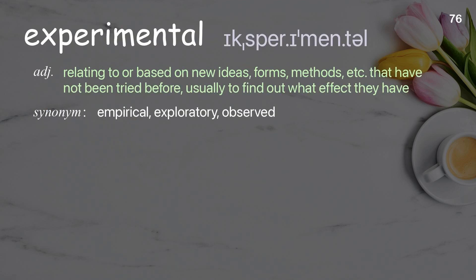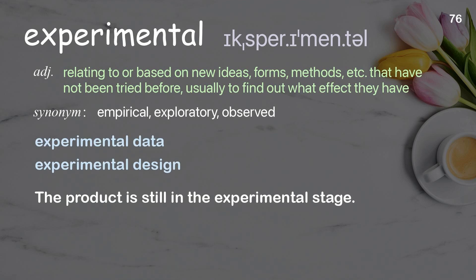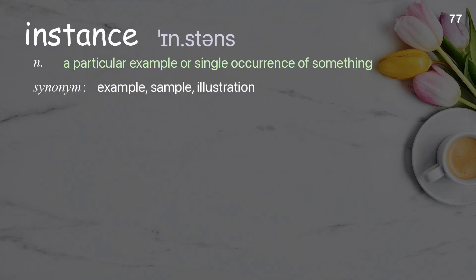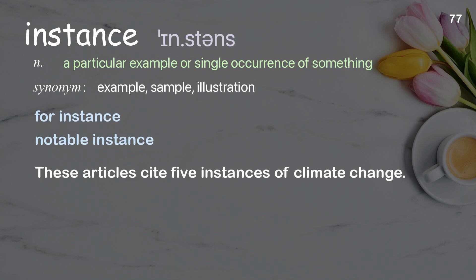Experimental: relating to or based on new ideas, forms, methods, etc. that have not been tried before, usually to find out what effect they have. The product is still in the experimental stage. Instance: a notable instance. These articles cite five instances of climate change.